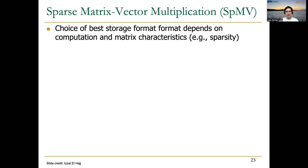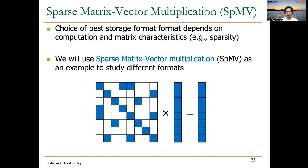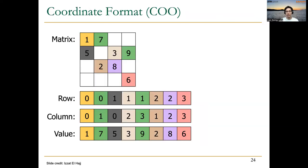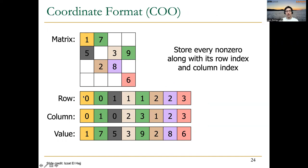We are going to use SpMV as an example, since the choice of the best storage format depends on the computation and the matrix characteristics — basically the sparsity. In matrix vector multiplication, we have a sparse matrix and a dense vector, and the result is an output dense vector. Let's start with the Coordinate Format, or COO. For every element of the sparse matrix, we store the non-zero element along with its row index and its column index. For example, this element with value 1 has indices 0 and 0.